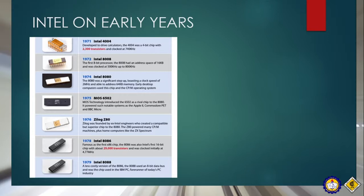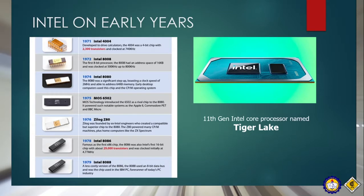In 1975, there was the 6502, which powered such notable systems as the Apple II. In 1976, the Zilog Z80 was founded. And 1978 saw the Intel 8086, the first x86 chip, with 29,000 transistors and clocked initially at 4.77 MHz. In 1979, the Intel 8088, a lower-cost version of the 8086, was developed. This year, the 11th Gen Intel Core processor named Tiger Lake was released — a 10-nanometer processor with a max peak clock rate of 5.0 GHz and 2 to 8 cores.